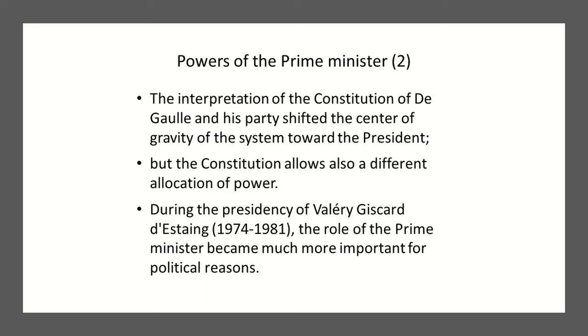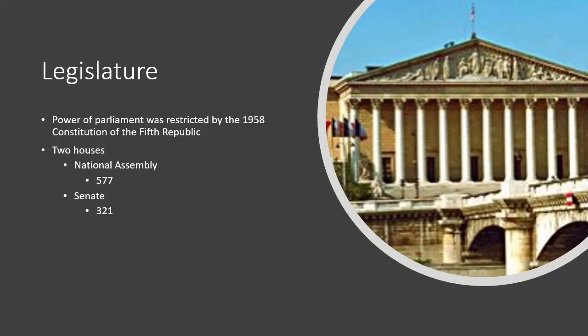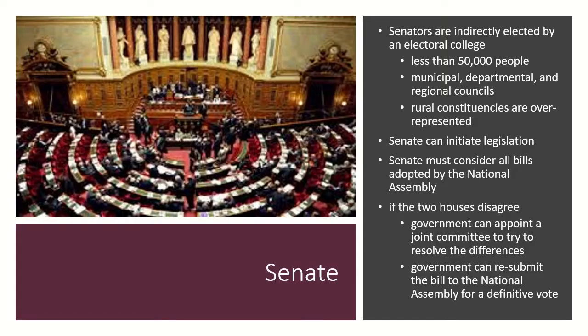The 1958 French Constitution restricted the power of parliament in the Fifth Republic. There are two houses: a National Assembly of 577 members, and an upper house, a Senate, of 321. Senators are indirectly elected by an electoral college representing less than 50,000 people — selected by municipal, departmental, and regional councils — with rural constituencies often overrepresented. The Senate can initiate legislation and must consider all bills adopted by the National Assembly. If the two houses disagree, the government can appoint a joint committee or resubmit the bill to the National Assembly for a definitive vote.